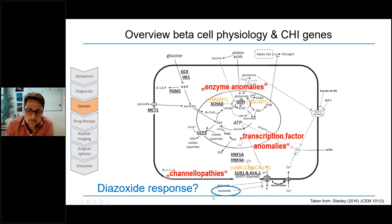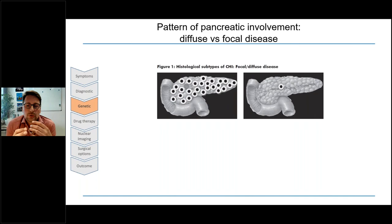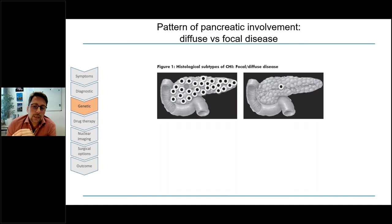The target structure for diazoxide, the most important therapeutic agent in congenital hyperinsulinism, is located exactly at this ATP-sensitive potassium channel. You can therefore imagine that mutations in ABCC8 and KCNJ11 may significantly affect responsiveness to diazoxide. There are two main patterns of pancreatic involvement: diffuse disease, where all of the pancreas is affected, and focal disease, with a single focus causing excess insulin secretion.